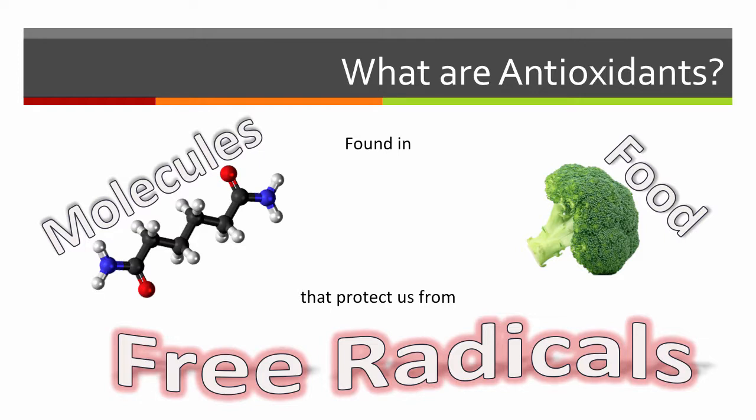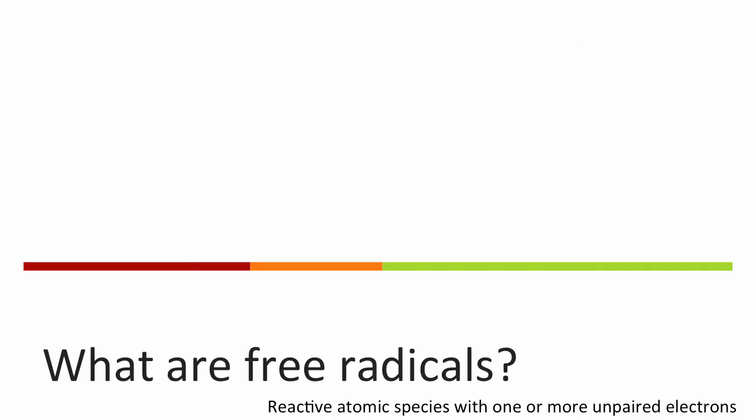To understand how we benefit from antioxidants, it is firstly important to understand what they protect us from — the free radicals. The scientific definition as seen at the bottom of this page states that free radicals are reactive atomic species with one or more unpaired electrons. To get a better understanding of this definition, we must move from large scale to small scale.